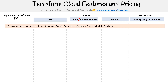In terms of feature set across the board, you have IaC, workspaces, variables, runs, resource graphs, providers, modules, and the public module registry, which is the Terraform registry. Workspaces is a bit odd because there are Terraform Cloud workspaces and local workspaces — technically those should be named differently, but that's just how it is with Terraform.